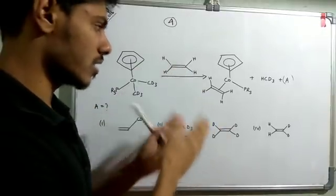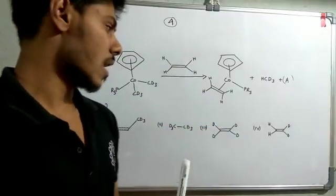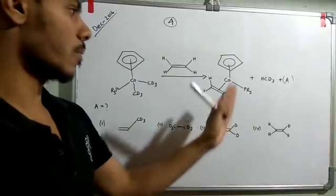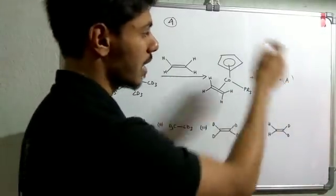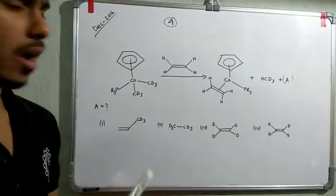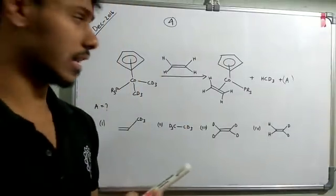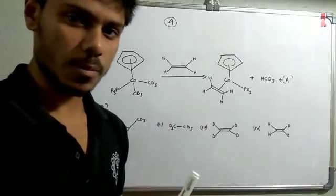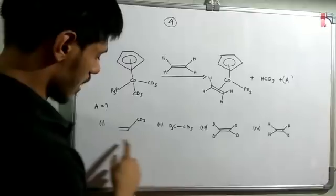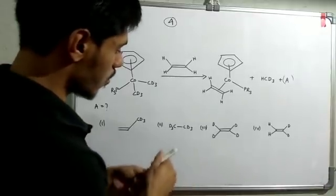Now I can solve this problem very quickly without even knowing the mechanism. The first time I saw this problem I didn't know the mechanism, but by looking at the products given I can easily predict what will be A. First I will tell how I guessed the product and then I will discuss the mechanism.